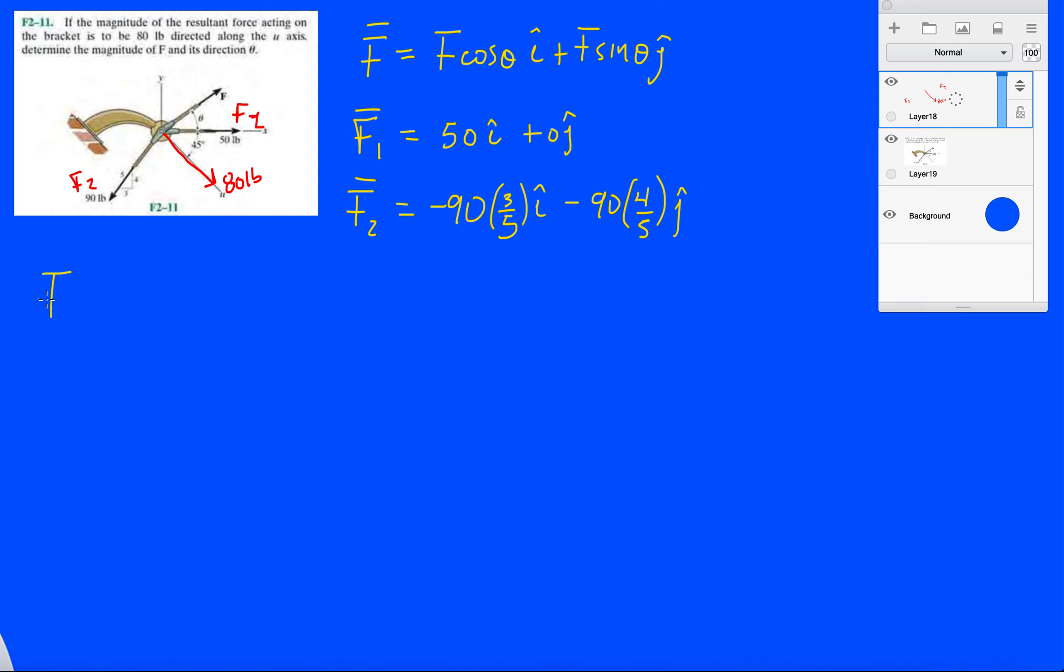So we know our resultant is made up of FRx i plus FRy j, which can be translated to magnitude of it, 80 pounds. What's the adjacent side of the triangle that it forms? It'll be that, the side that's parallel to the x-axis, so it's going to be cosine 45 i.